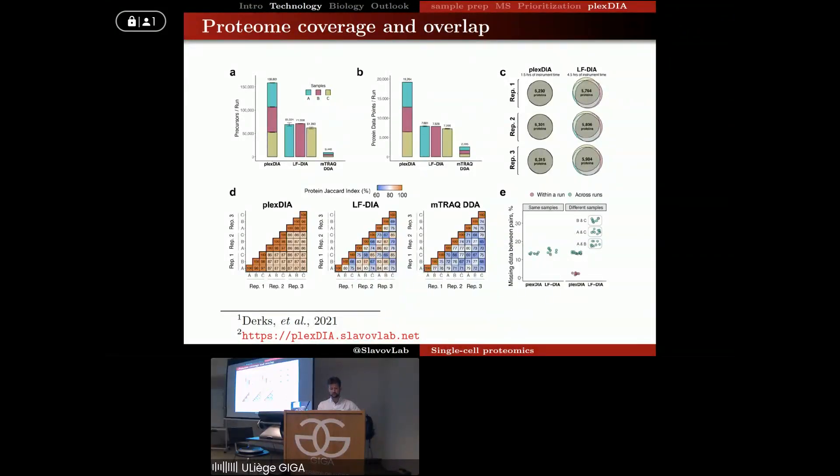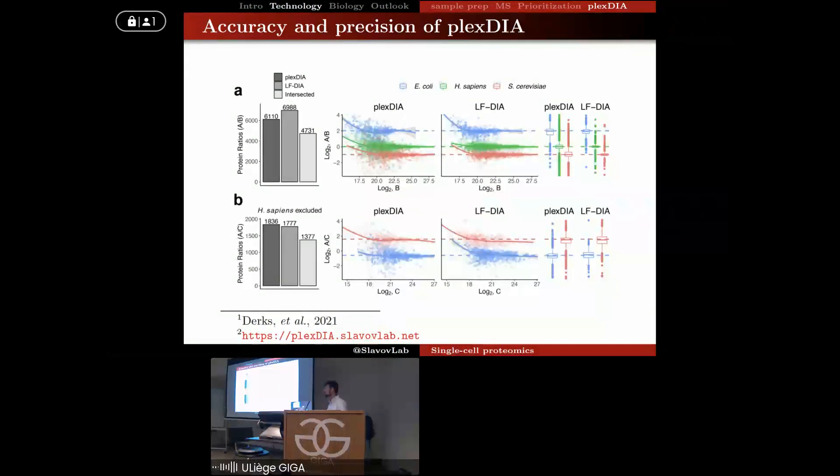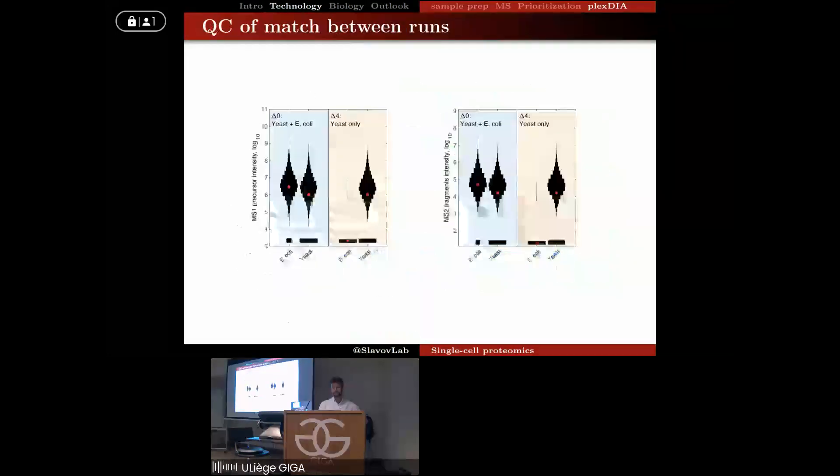But are these data points any good? So let's look at the ratios. Here on the x-axis we have the abundance of the proteins - so these are complete proteomes that we've mixed, they span dynamic ranges - and the dashed lines correspond to the expected mixing ratios, and the data points correspond to measured ratios. And here this is also shown in the box plots, and what we find is that the measured ratios are very close to the expected ratios, affirming that this multiplexing preserves the quantitative nature of the data. There is no downside in terms of accuracy of quantification.